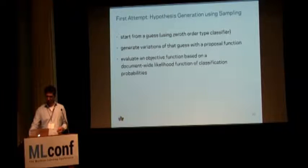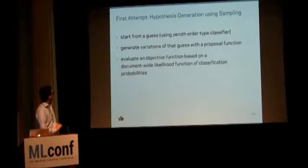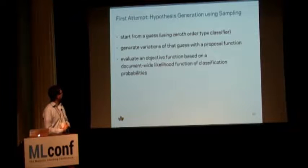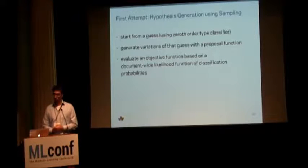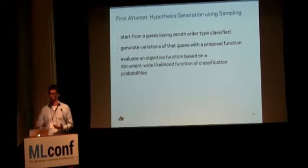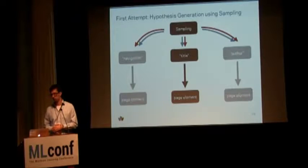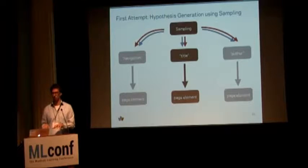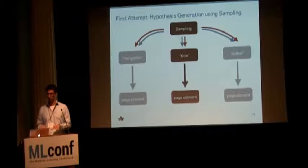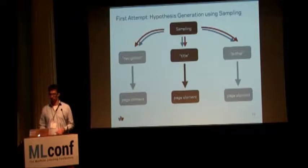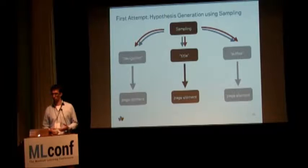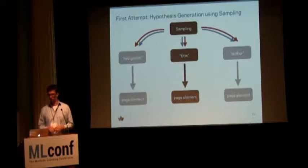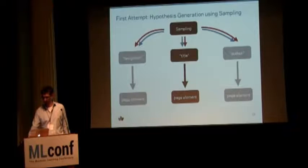What we did was make a zeroth-order guess for all elements, then generate hypotheses of modifications to that guess and see whether a global objective function of the document improves. This is a sampling approach very similar to conditional random fields, but we just define a global hypothesis about what all your elements are, have an objective function, and then walk through the space with a good proposal function to find a globally optimal configuration. Instead of loops of dependencies, we globally define what everything is, see how well we did, and sample through that space.